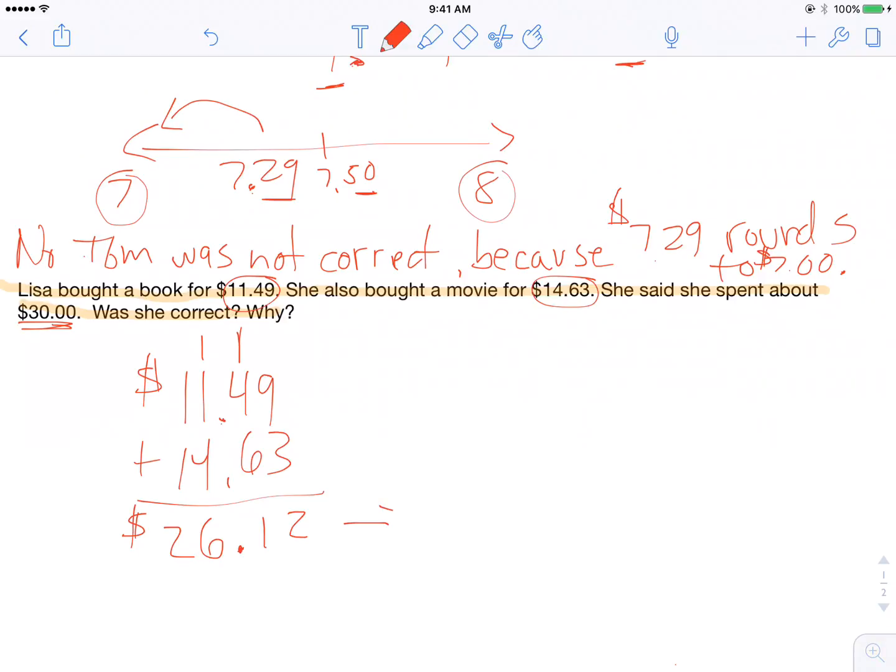Now she said that this rounds to $30. So I can tell, because the answer is 30, that she's rounding to the nearest 10. So $26.12. On my number line, what two tens is 26 between? Well, it's between 20 and 30. And I know halfway between 20 and 30 is 25.